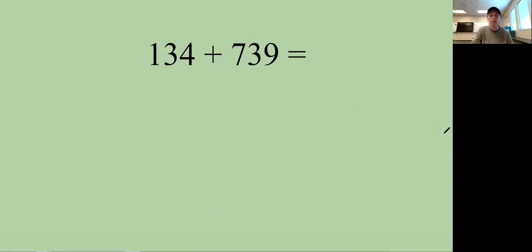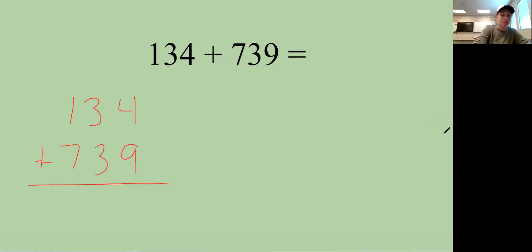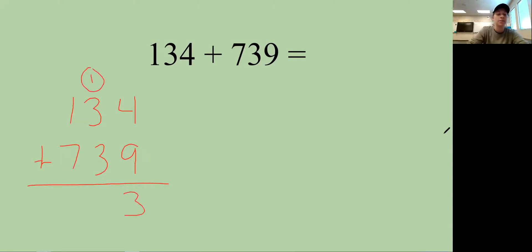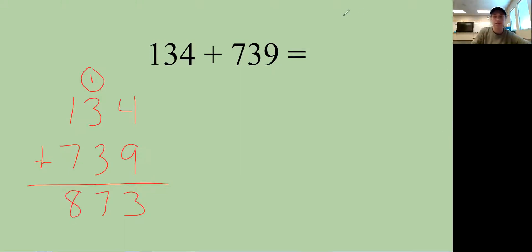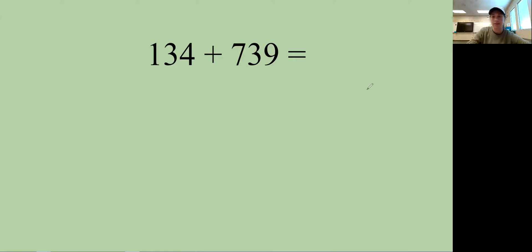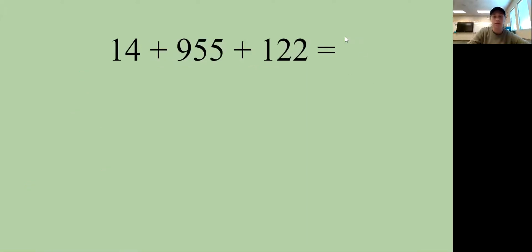Let's practice with a harder question: 134 plus 739. When I say line up your place value, write it up and down rather than sideways. Four plus nine is 13 — put the three down and carry the one. One plus three plus three is seven, and seven plus one is eight. So the answer is 873.